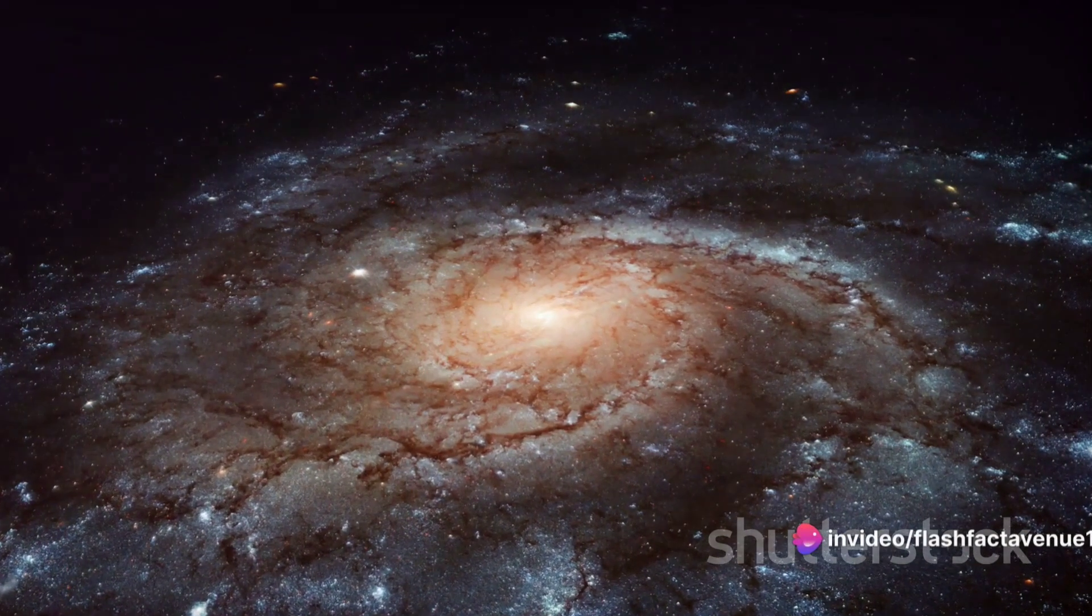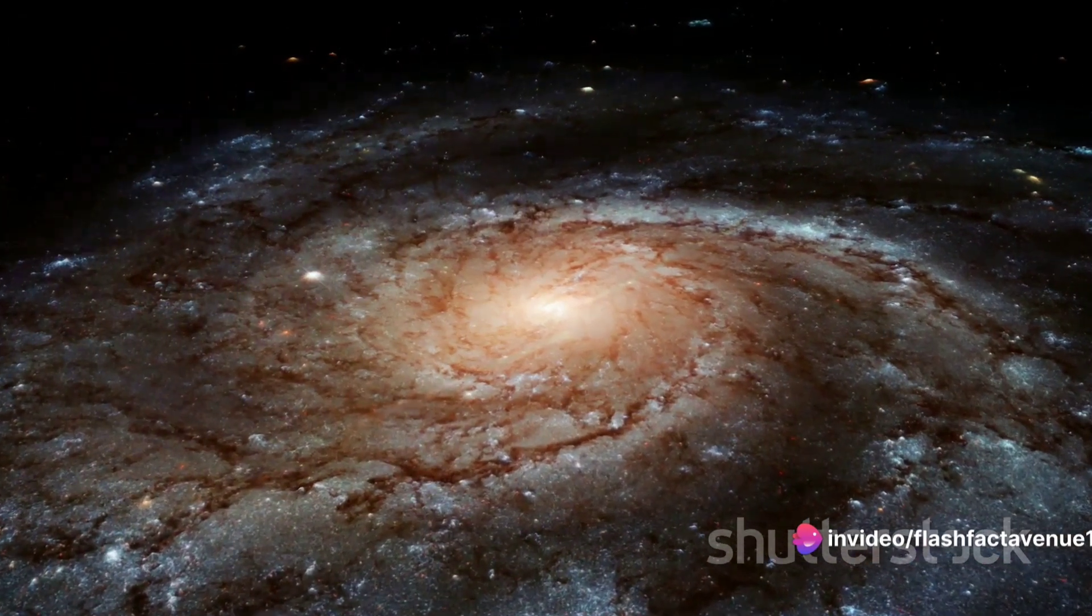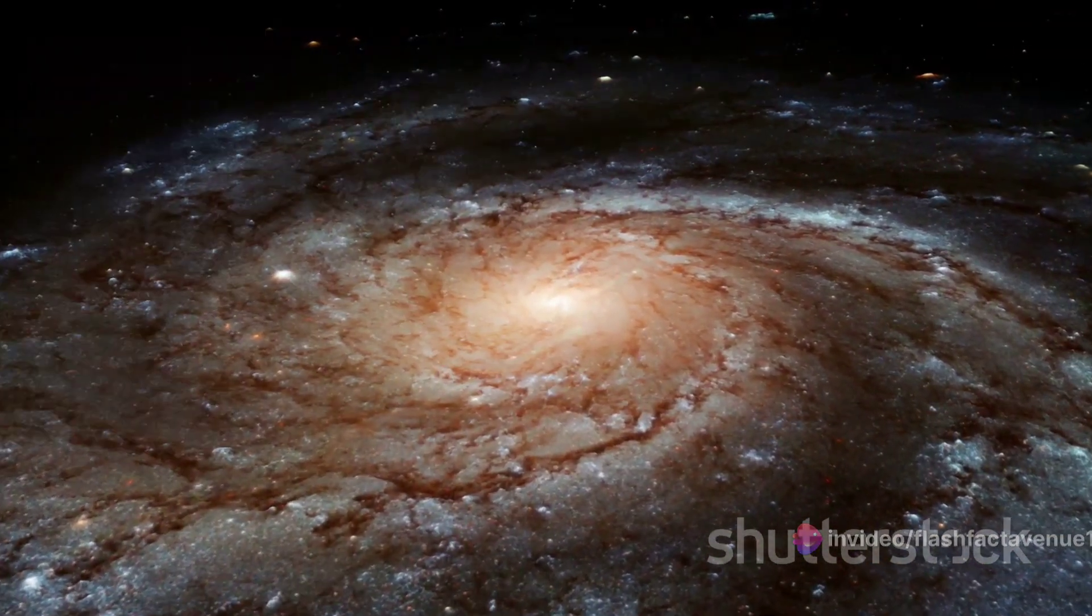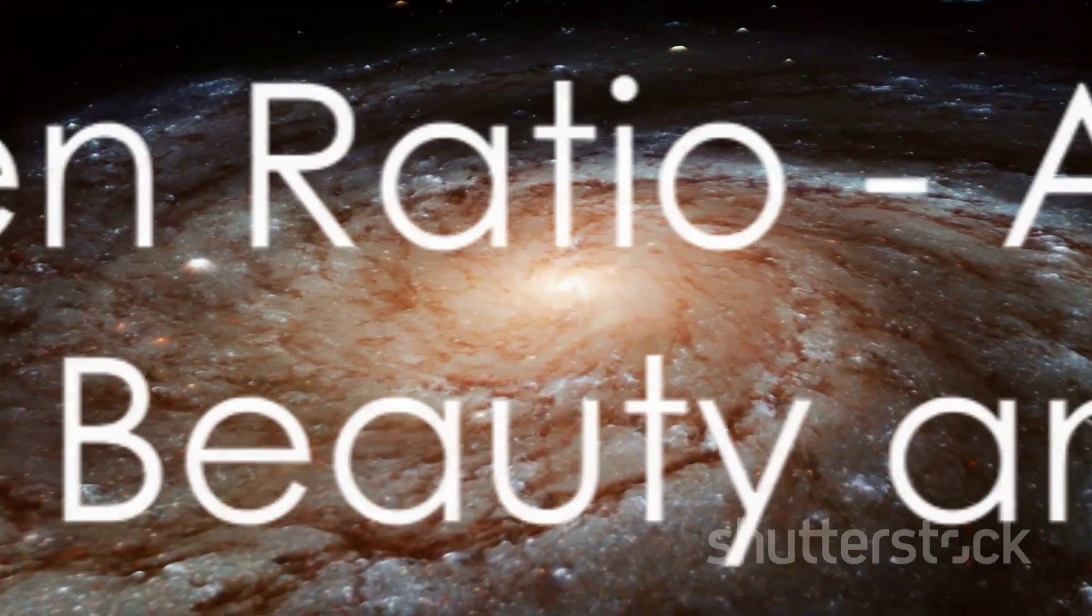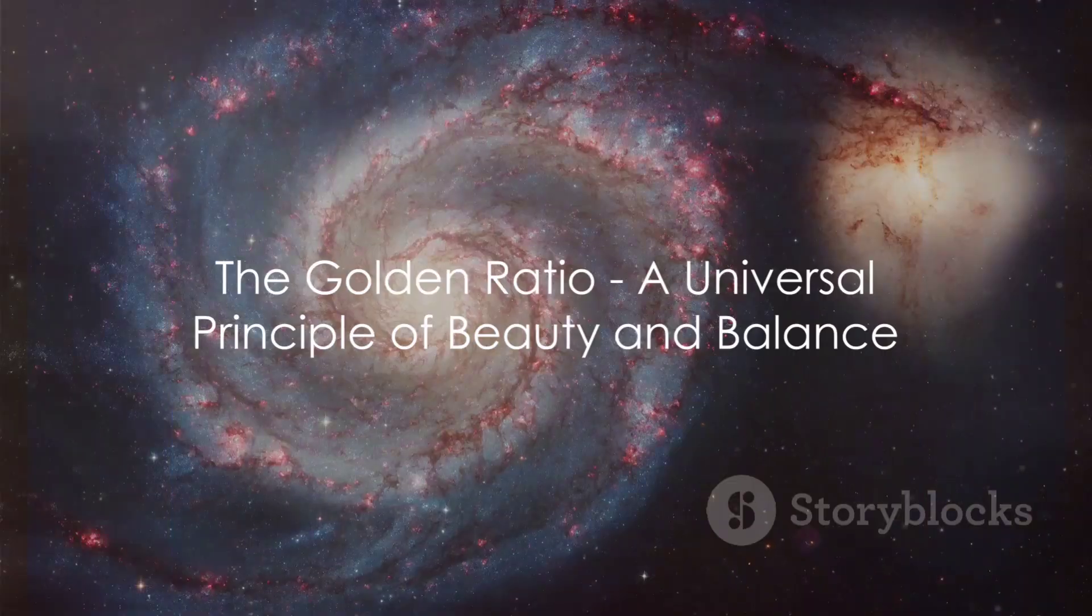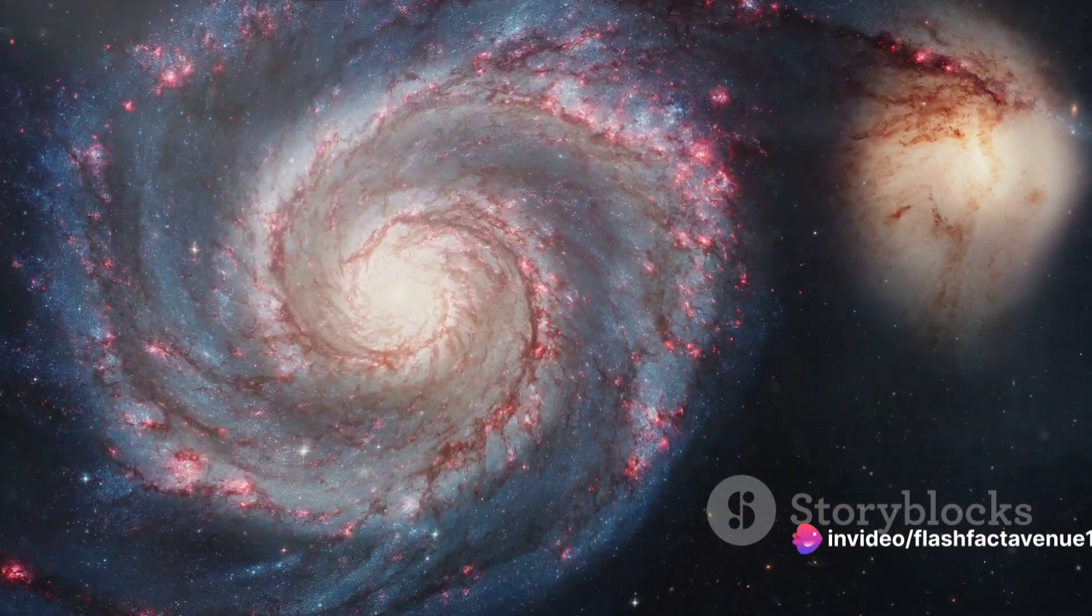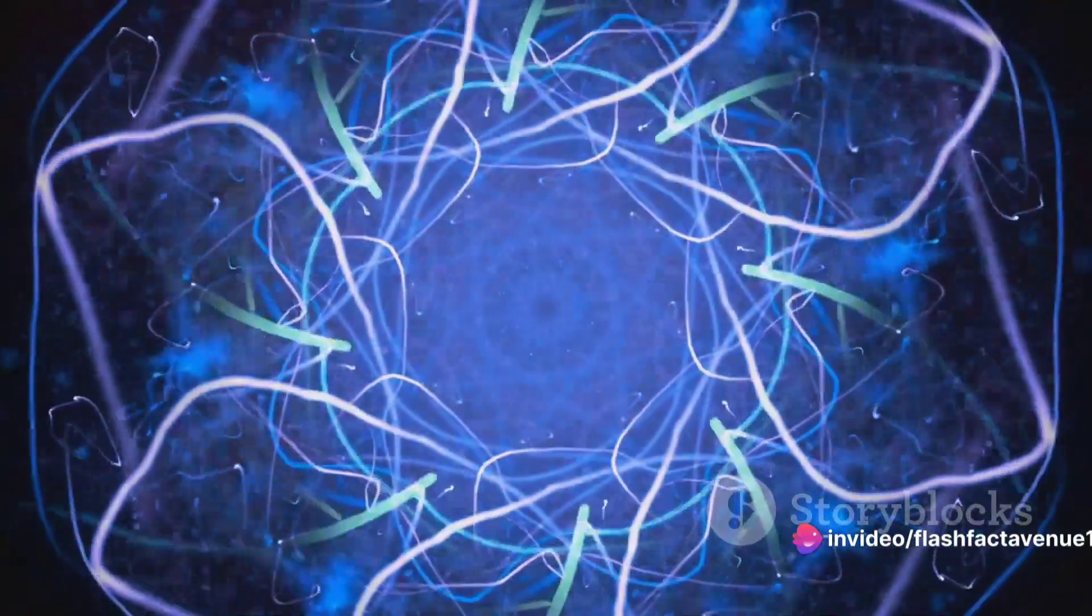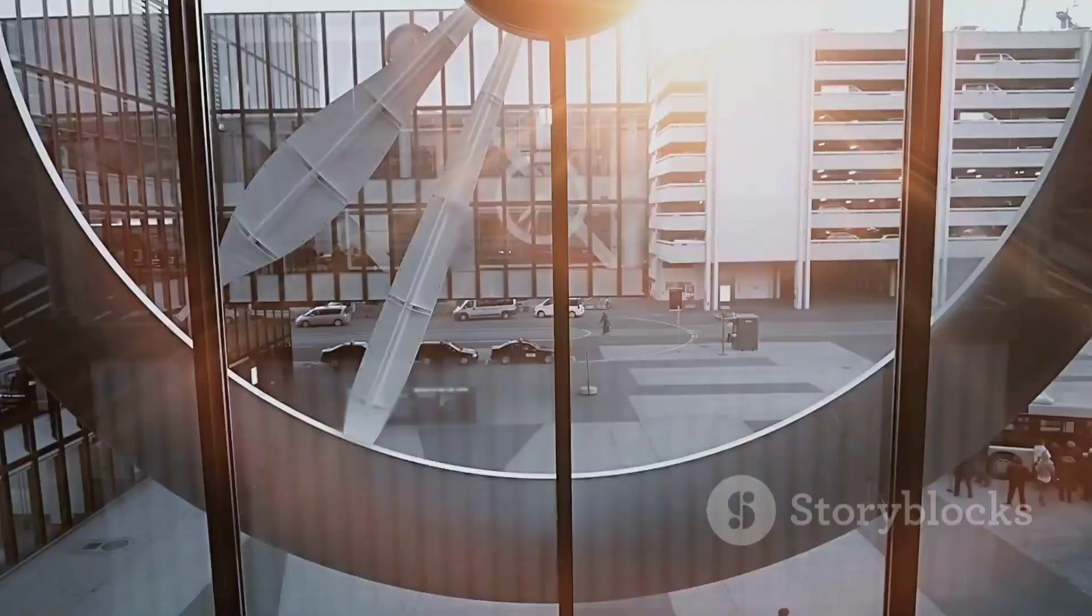This mystical number, approximately equal to 1.618, is woven into the very fabric of the universe, from the spiral of galaxies to the patterns on a pine cone. The golden ratio is not just a mathematical curiosity. It's a universal principle of beauty and balance. It's a subtle reminder of the deep connections between mathematics and the natural world.